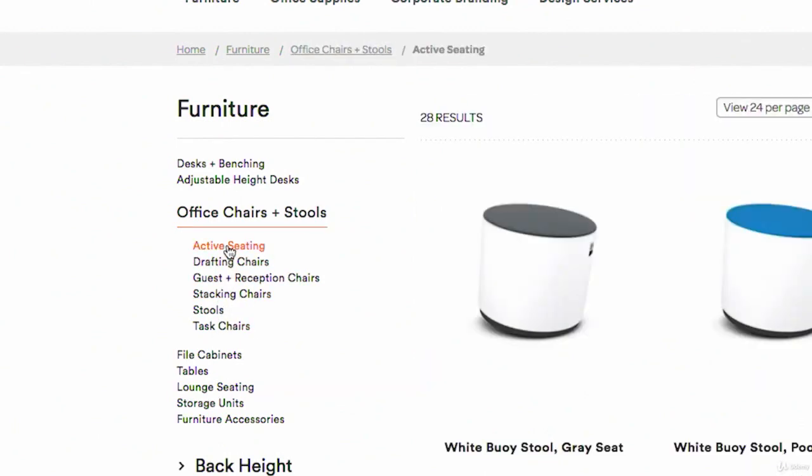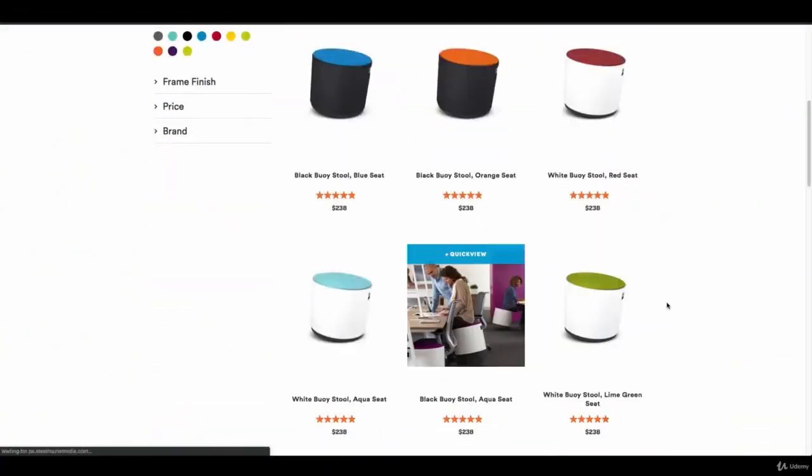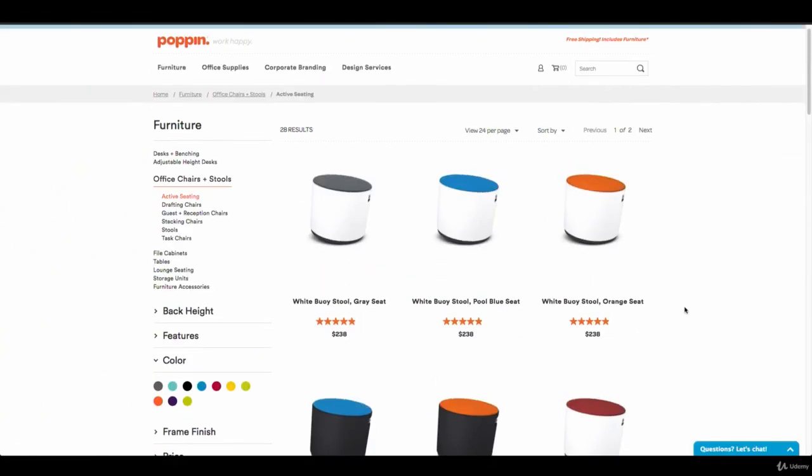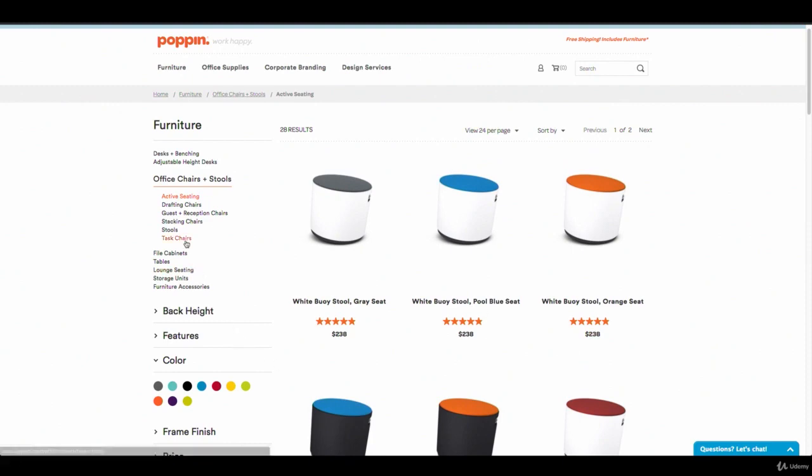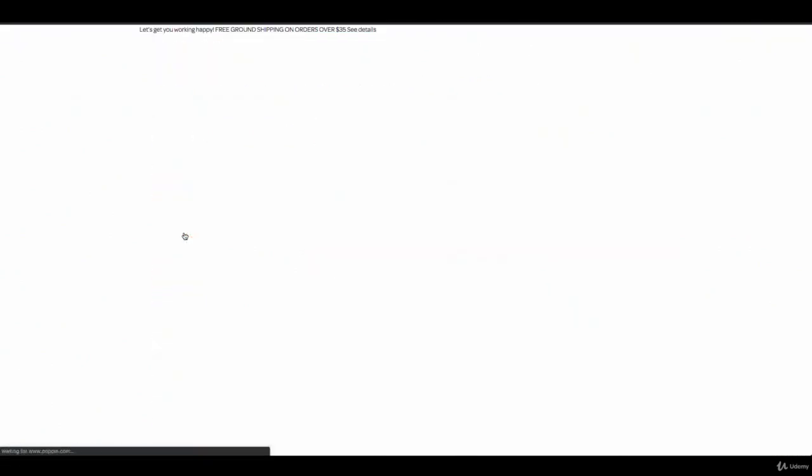So I feel that there's enough of a segmentation here because these products are quite different. Because let's say I take a look at active seating, you have these stools and then I have task chairs, which are very different. And then I have stacking chairs, which might be better for conference rooms or for lunch rooms.